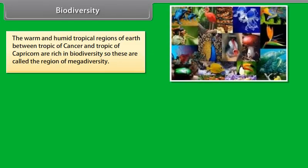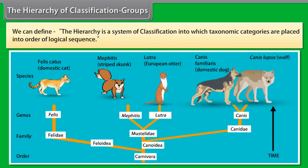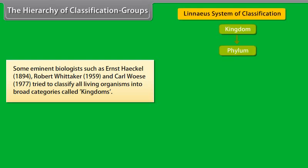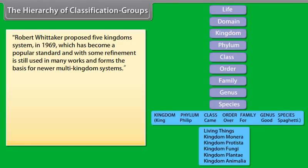Approximately 1 million of these organisms are insects. 50% of these organisms live in tropical rainforests which have not been fully explored. The warm and humid tropical regions of Earth between the Tropic of Cancer and Tropic of Capricorn are rich in biodiversity and are called the region of megadiversity. The biodiversity is concentrated in a few countries due to favorable climatic conditions. About 50% of the planet's biodiversity can be found in countries like Australia, Brazil, Colombia, Ecuador, China, India, Indonesia, Madagascar, Malaysia, Mexico, Peru, and Zaire.